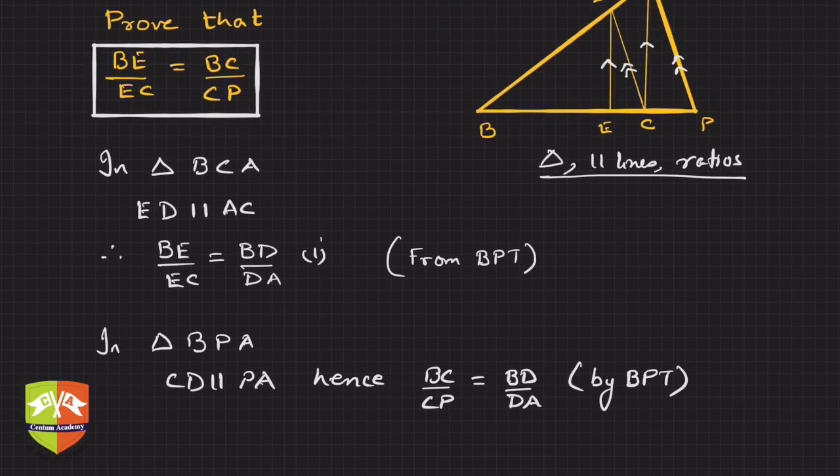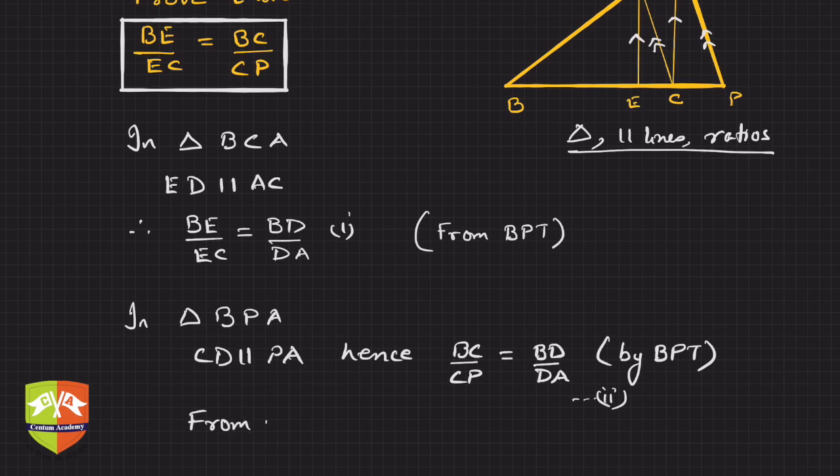So this you can write as two, right? So you can write from one and two, you can write BE by EC is equal to BC by CP. Why? Because both are equal to BD by DA, right? Hence proved.